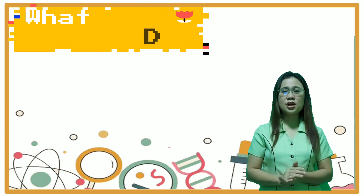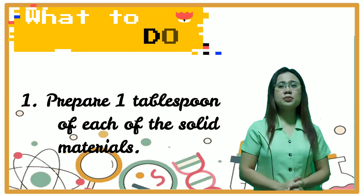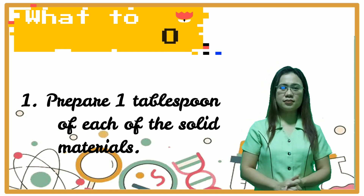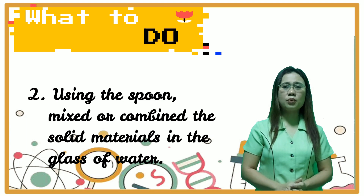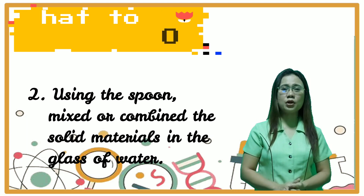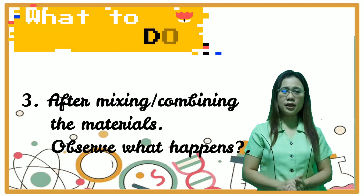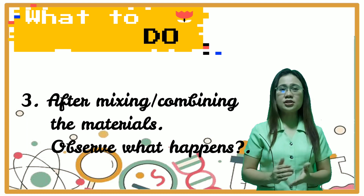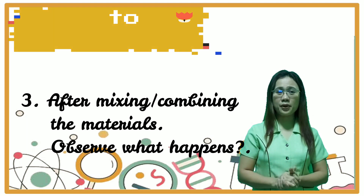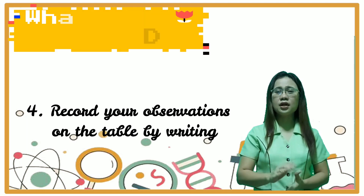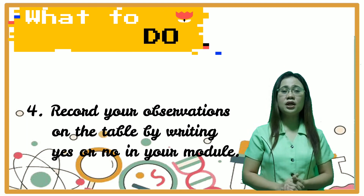The procedures — what to do. First, prepare one tablespoon of each solid material. Second, use the spoon to mix or combine the solid materials in the glass with water. Third, after mixing or combining the solid materials and the liquid materials, observe what happens. Fourth, record your observations on the table by writing yes or no in your module.